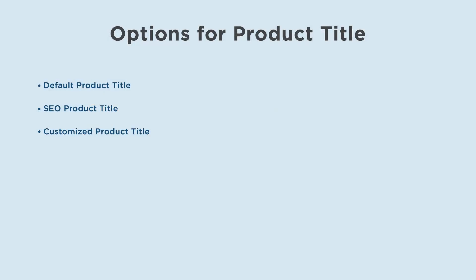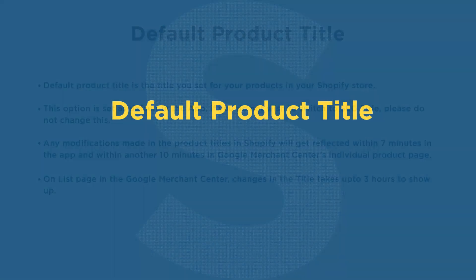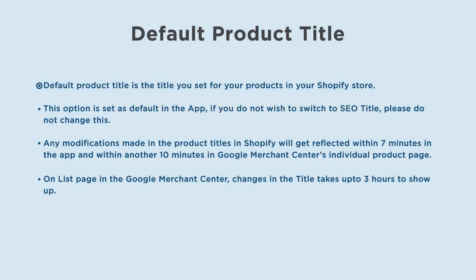The app provides you three different options to submit the product title attribute: default product title, SEO product title, and customized product title.